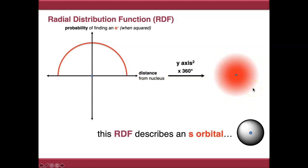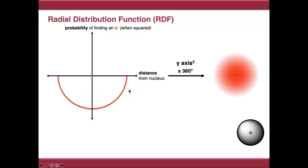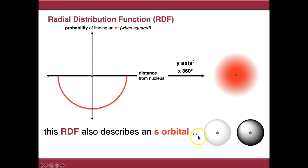This radial distribution function describes an s-orbital — a spherical orbital where you've got a higher chance of finding an electron close to the nucleus, which then drops off towards the edge. You can also draw an s-orbital radial distribution function with a different shape. The important part is that you square the axis, so there's never a negative probability of finding an electron. This still gives a positive chance of finding an electron close to the nucleus, but changes the phase of the orbital — it describes an s-orbital in the opposite phase.